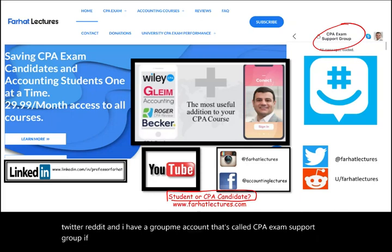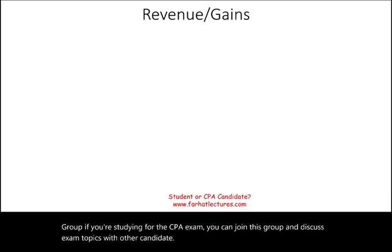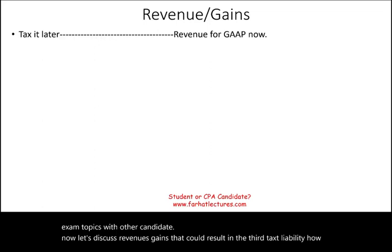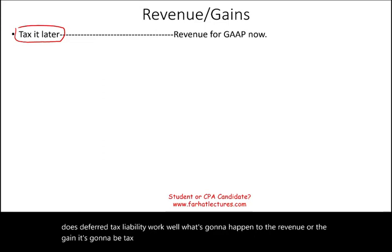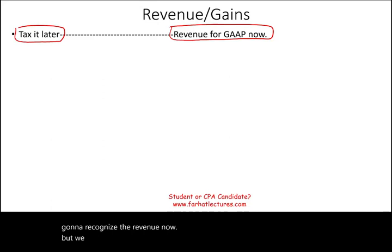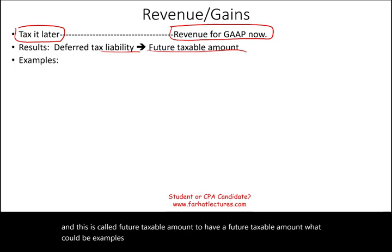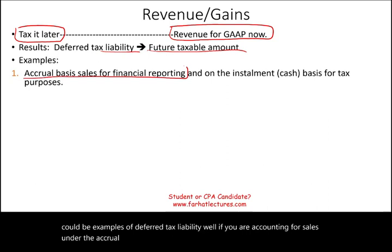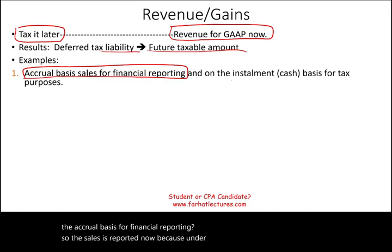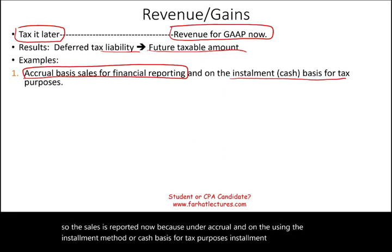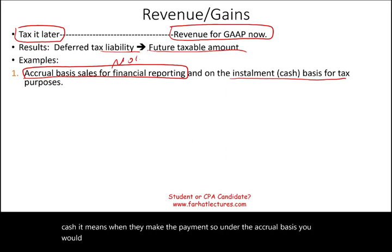For revenues or gains that result in a deferred tax liability, the revenue is recognized for GAAP now but taxed later. We don't pay taxes now; we pay them later — that's a future taxable amount creating a deferred tax liability. One example: sales reported under the accrual basis for financial reporting, but using the installment method or cash basis for tax purposes, so taxes on that revenue are paid later when cash is received.